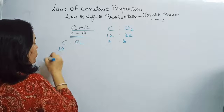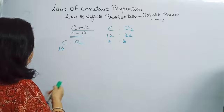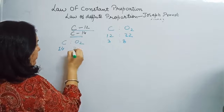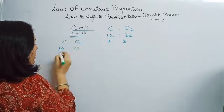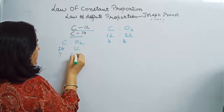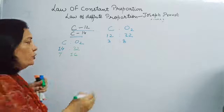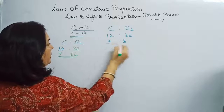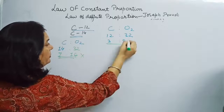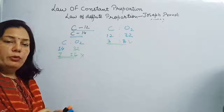The mass of C-14 carbon is 14 units, while oxygen remains the same at 32 units. So the ratio becomes 7:16, which is not the same as 3:8. This ratio is not fixed, as we can take one more example — water.